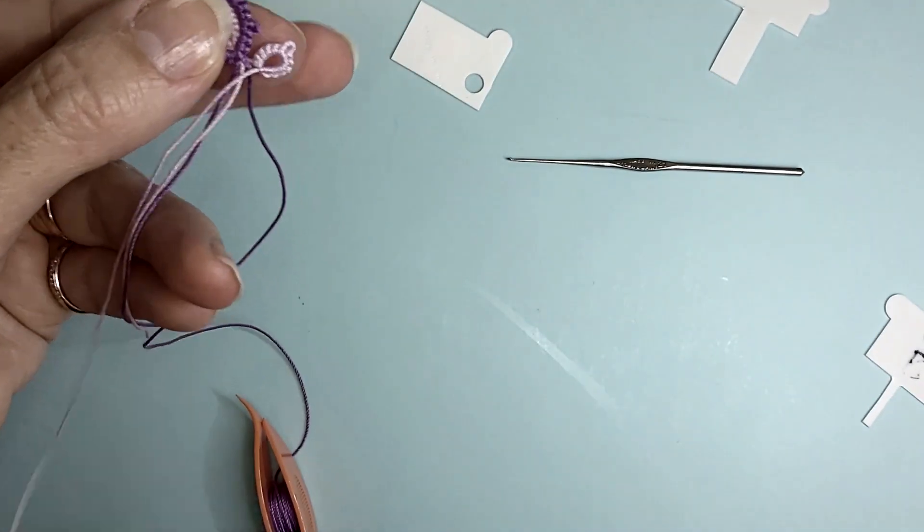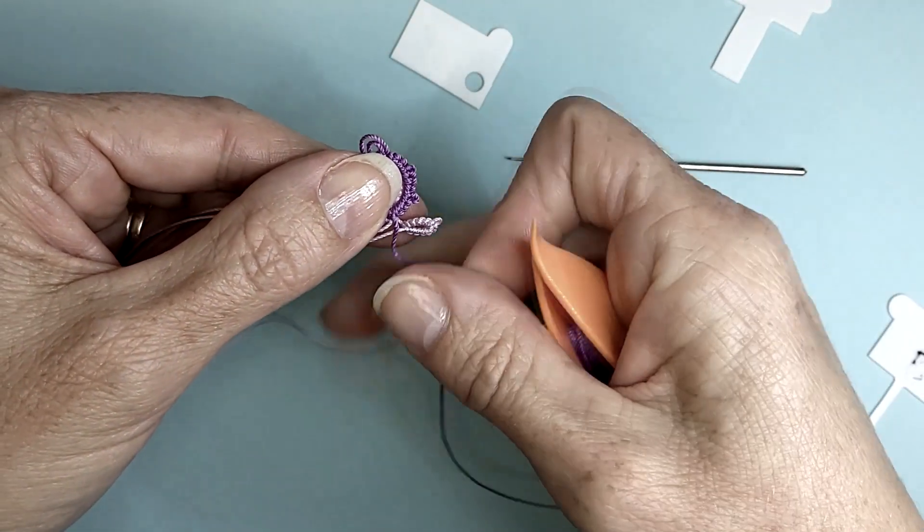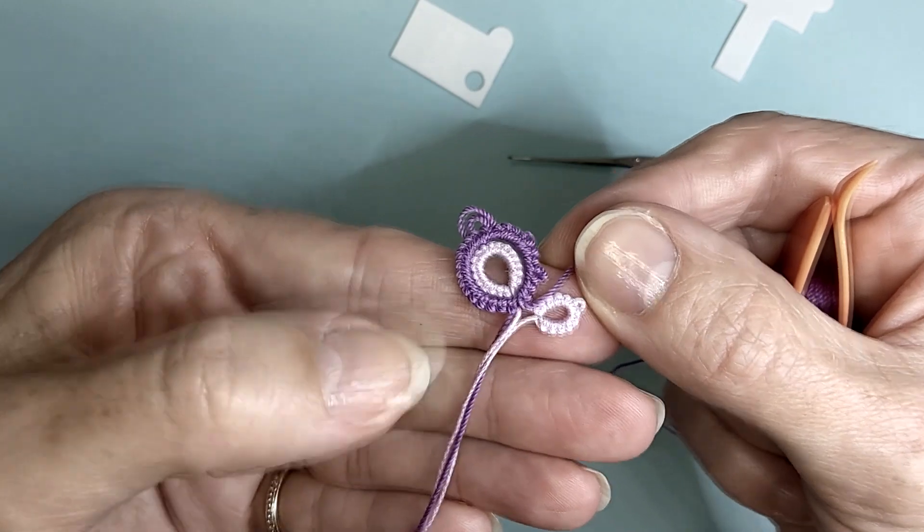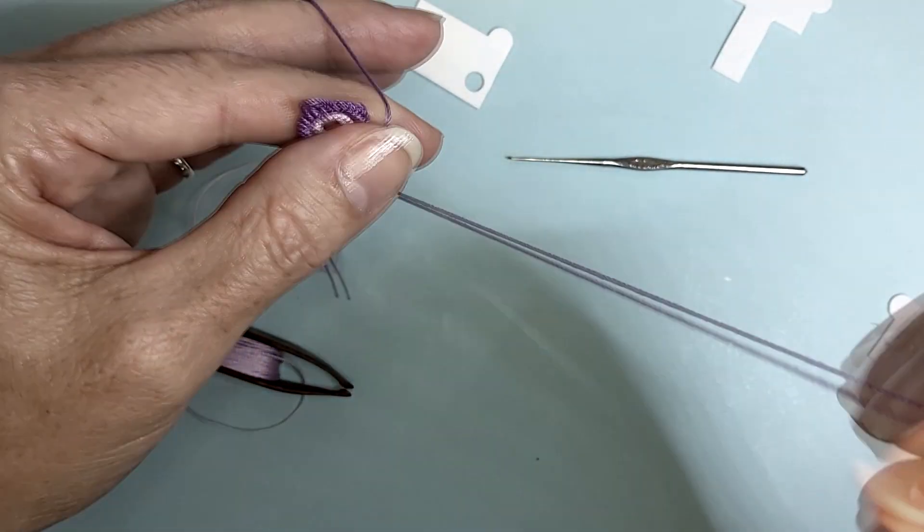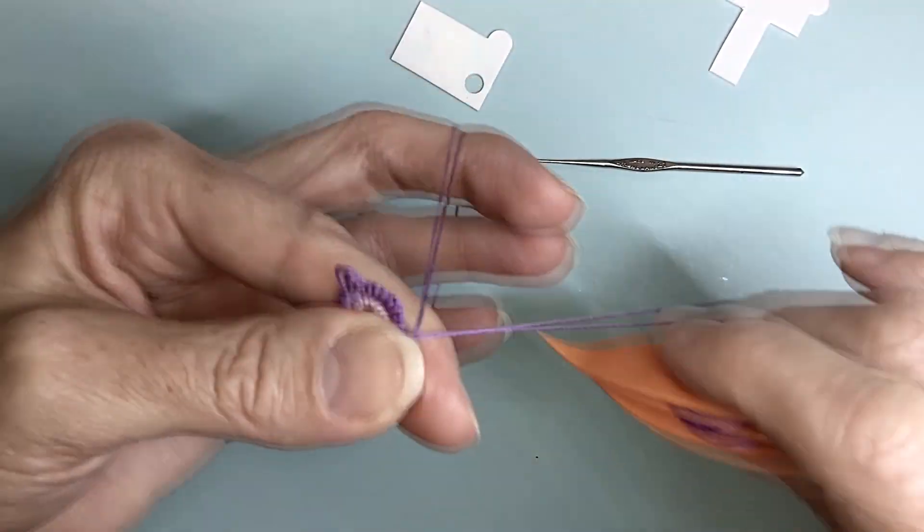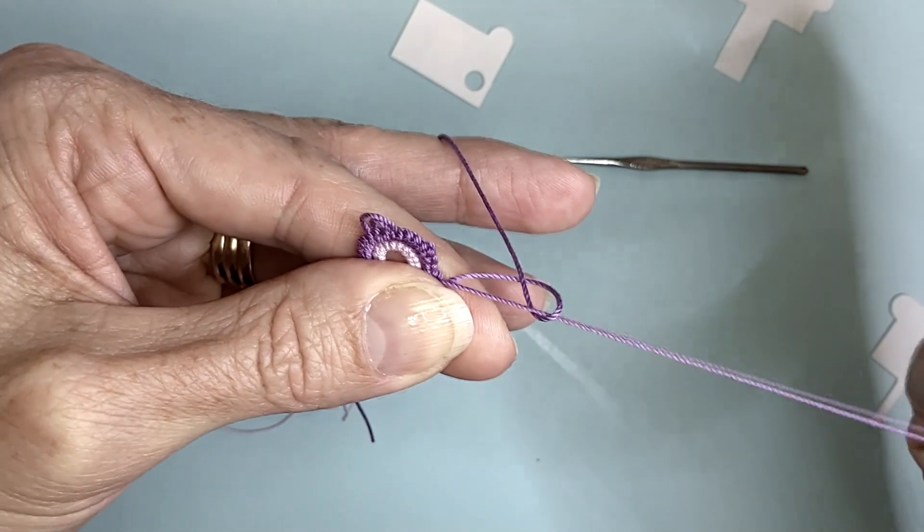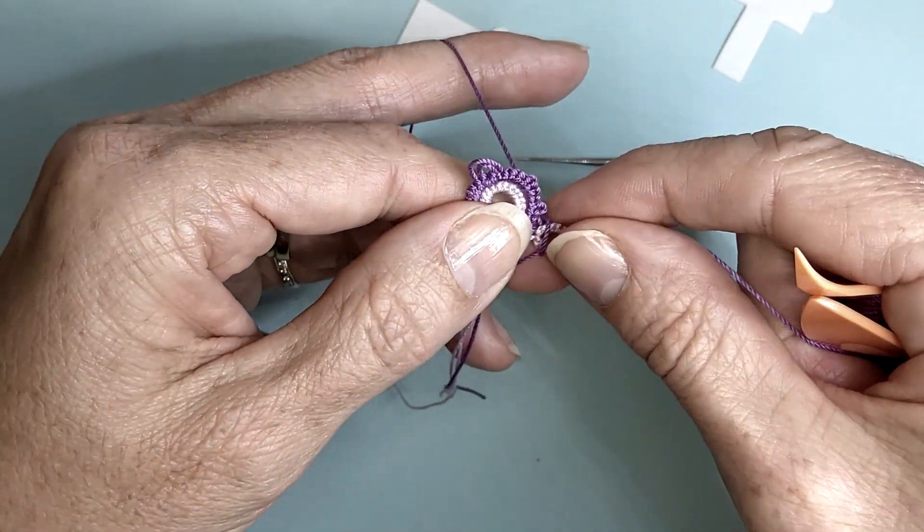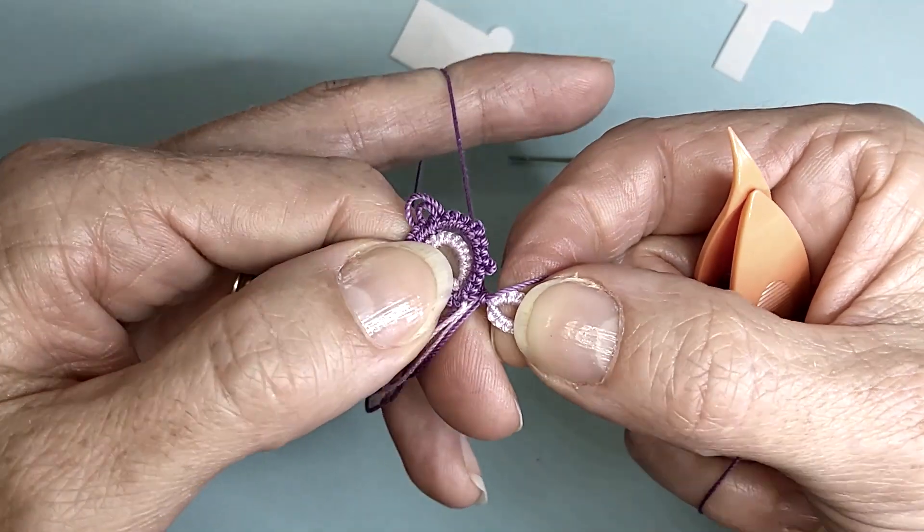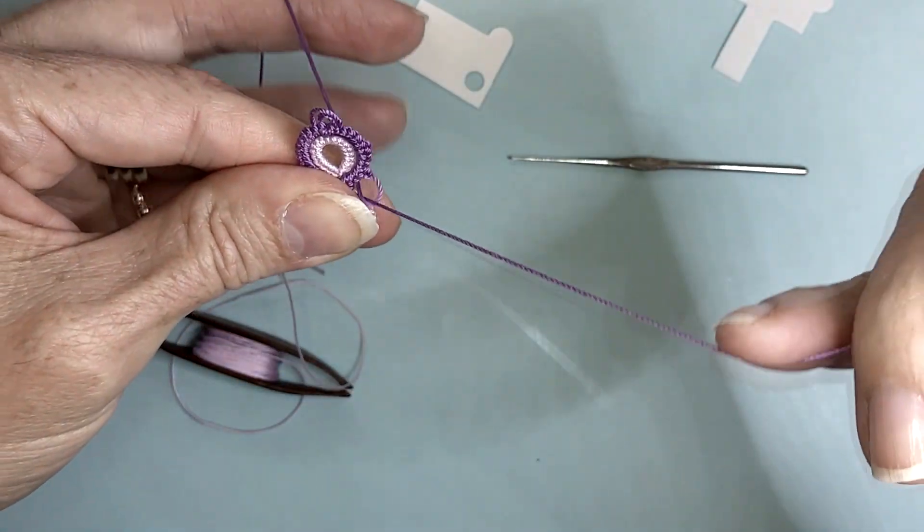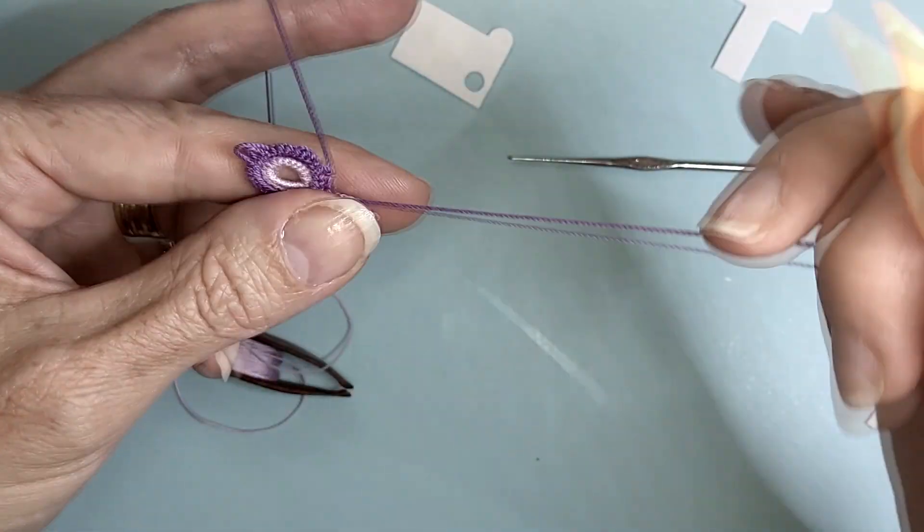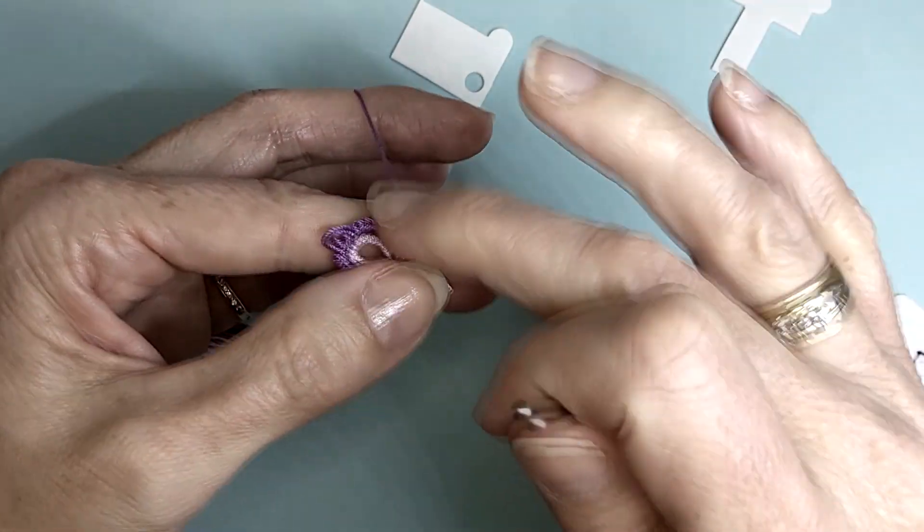Let's swap shuttles again. Ready to start our fourth ring. So we are doing the same thing as we did before. We are working the first half of the stitch, flipping it and not pulling it up. Pass your ring through the loop and then snug the stitch. Work the second half. We have another two stitches.